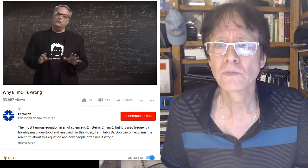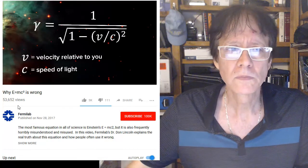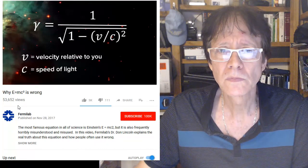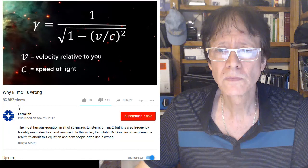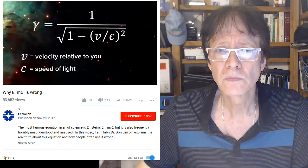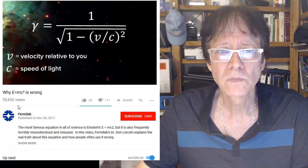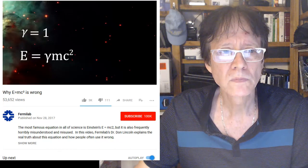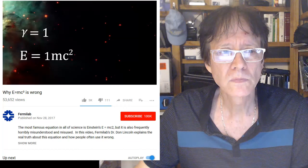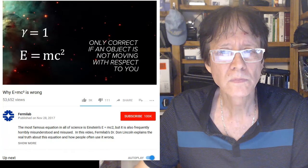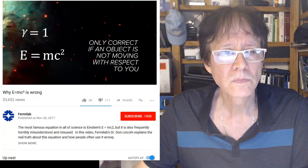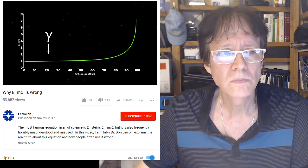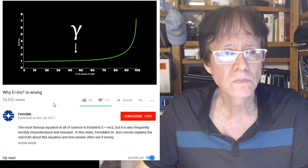Gamma is a term that is ubiquitous in relativity. It is defined as 1 over the square root of the quantity 1 minus v squared divided by c squared. V is an object's velocity relative to you, and c is the speed of light. If v is 0, then gamma is just 1. E equals mc squared is only correct if an object isn't moving with respect to you. And as an object's velocity increases towards c, gamma gets higher and higher and the energy of the object increases.